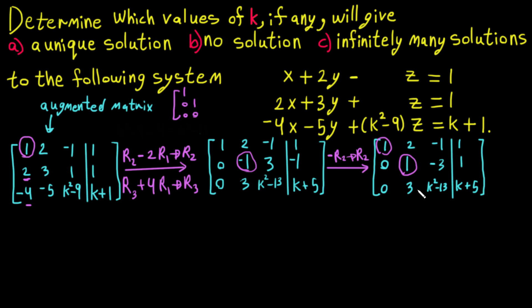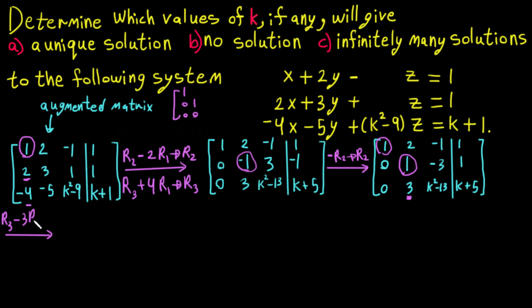We now have leading 1s in the first two rows. To make the entry below the second pivot equal to zero, we perform R3 minus 3 times R2 into R3.